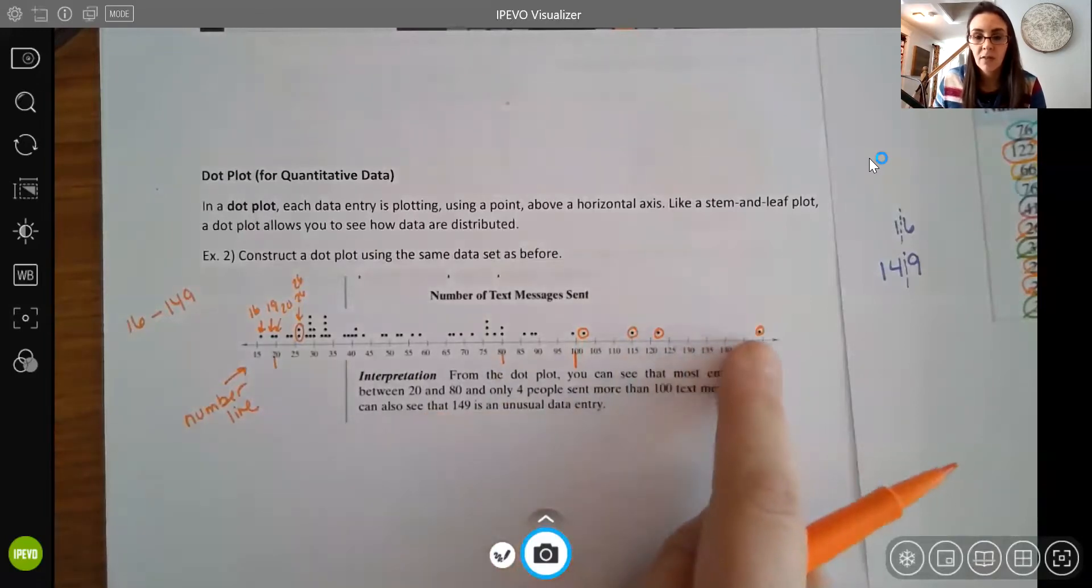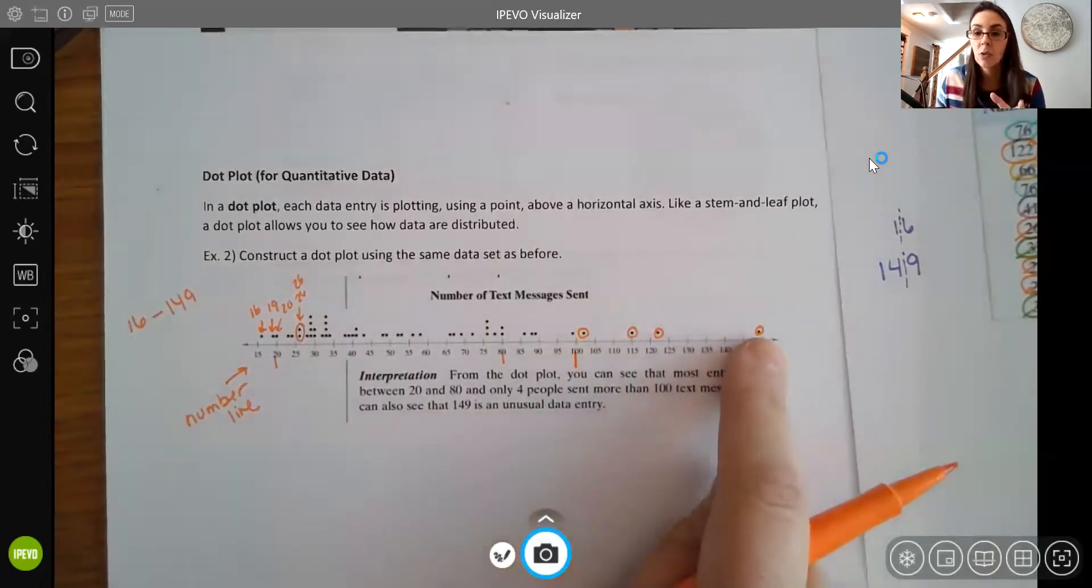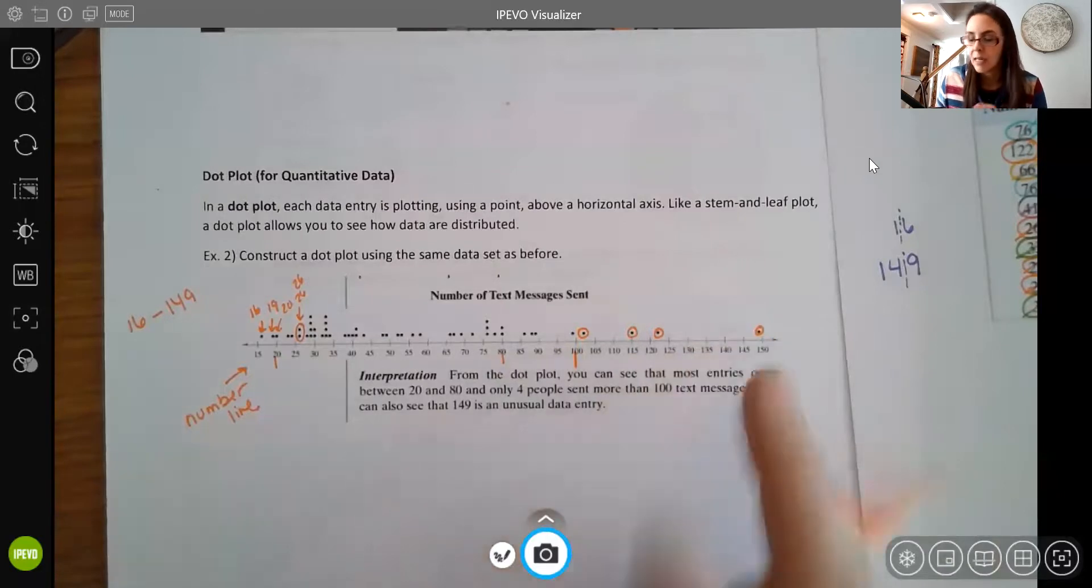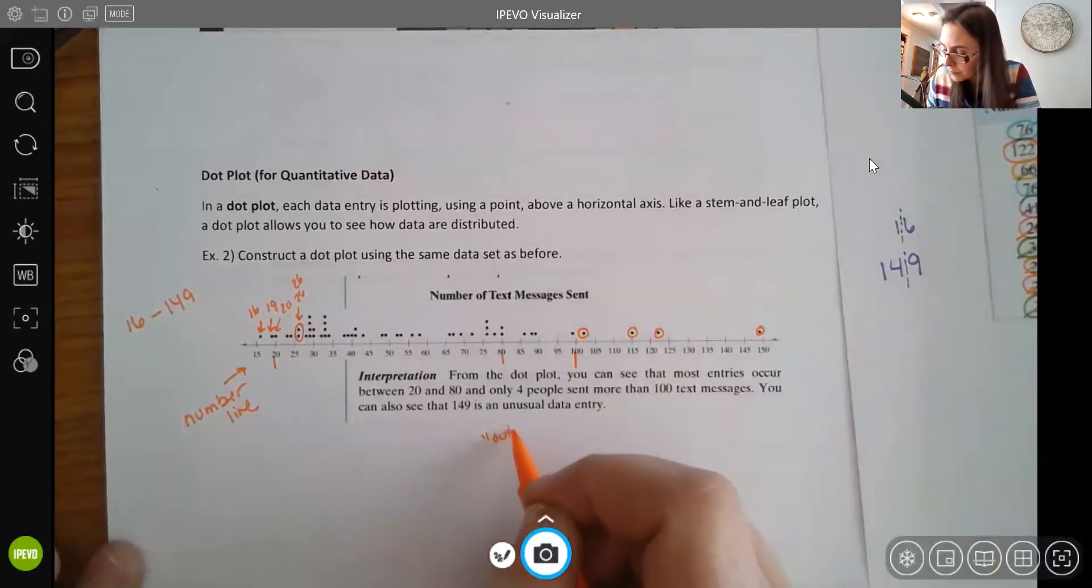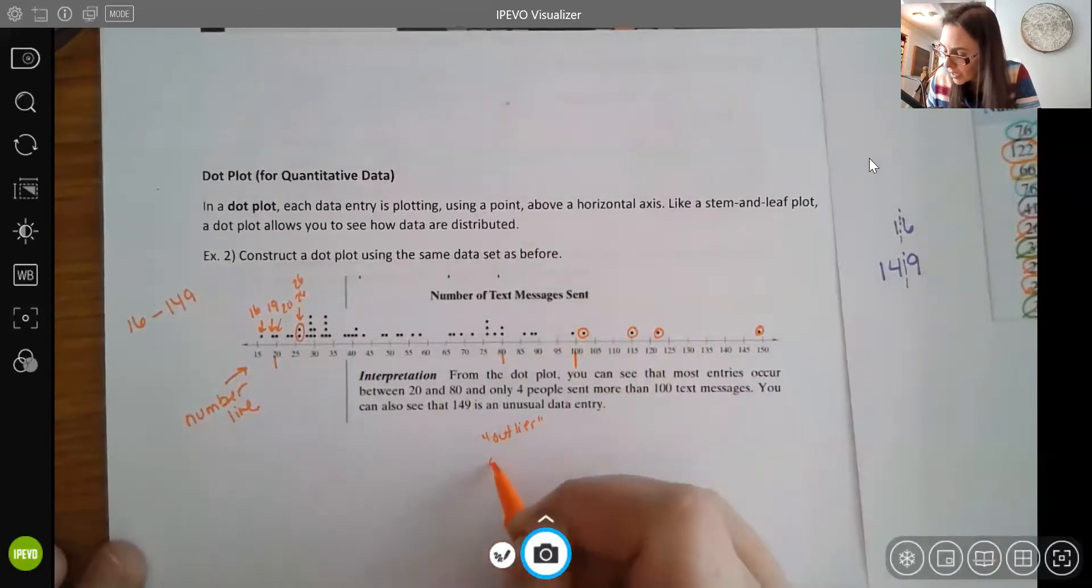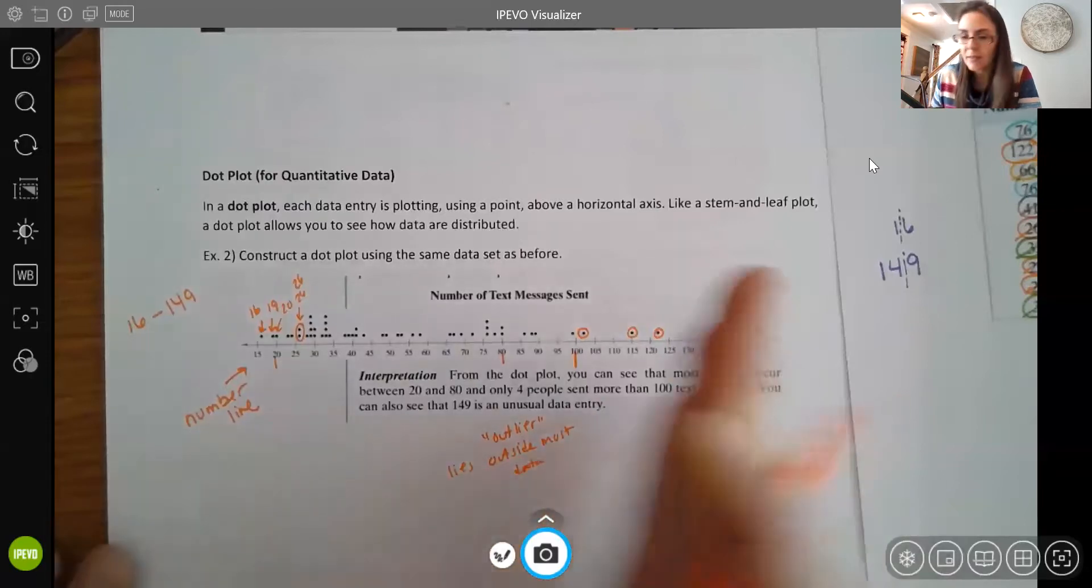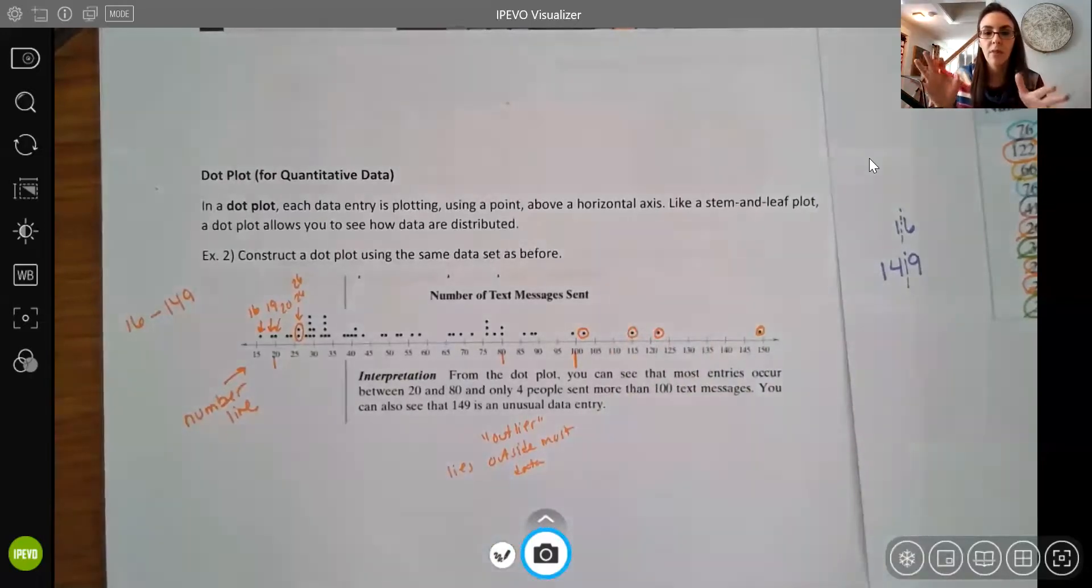And also it shows that that 149 tends to look really unusual. So it is an outlier. Because it lies outside most data. Right. So everybody else is kind of below there. And this 149 is sort of way off by itself. So that's something we call an outlier. It's a data point that, again, seems outside the norm or outside what most of our other data is showing.